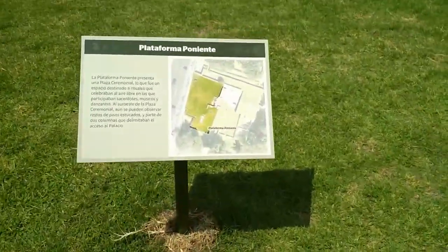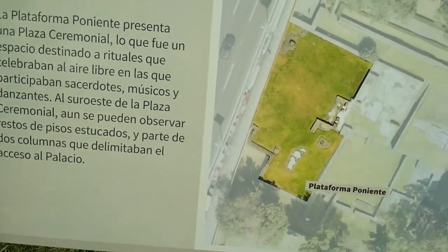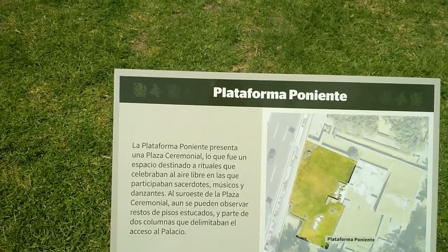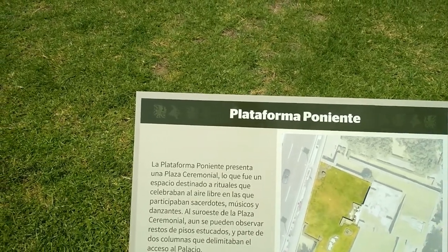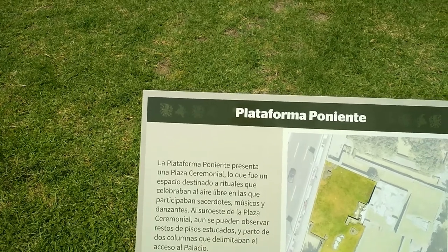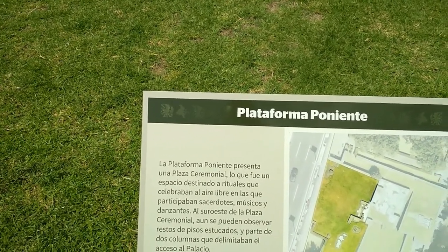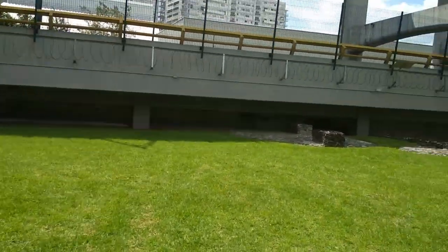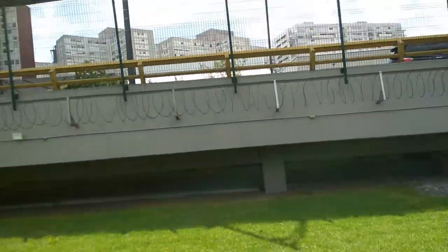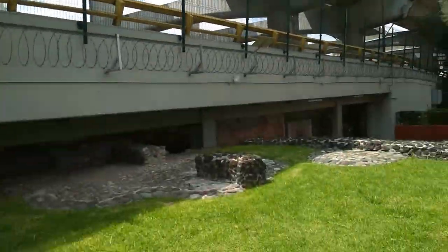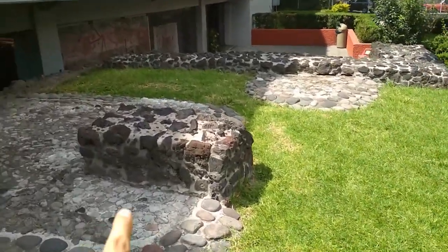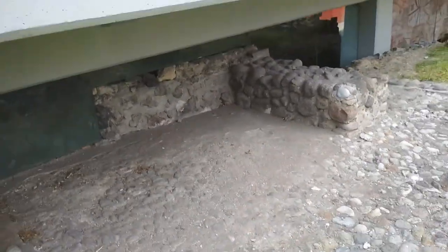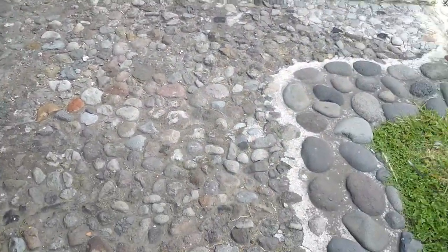Plataforma poniente. Aquí está la plataforma poniente, que representa una plaza ceremonial, un espacio destinado a rituales que se celebraban al aire libre, en los que participaban sacerdotes, músicos y danzantes. Al sureste de la plaza ceremonial aún se pueden observar restos de pisos estucados y parte de dos columnas que delimitaban el acceso al palacio. Aquí eran dos columnas, esta y esta, y todavía se ve un pedacito de estuco. Como ven, es piedra de río.